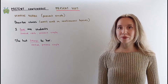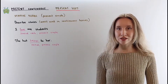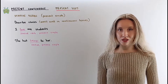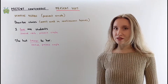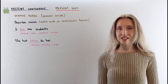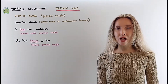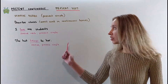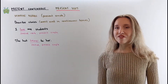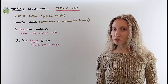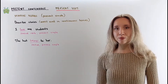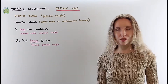Static verbs describe states or conditions. They are not used in continuous tenses — use the present simple. They don't indicate any dynamic action. For example: I love my students. The verb 'love' is a stative verb — it shows the emotional state of the subject. The subject doesn't perform any physical action. When you say you love someone, do you perform an action?